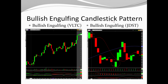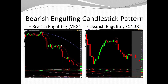Bullish engulfing candlestick patterns consist of a group of candlesticks that give you a good idea of which direction the chart wants to go. In a bullish engulfing pattern, a smaller red candle is totally engulfed by a bigger green candle, producing an uptrend. In a bearish engulfing pattern, an upside move is completely engulfed by a red sell-off candle, producing a strong downside move. At the top of a chart, a bearish engulfing pattern signals a move to the downside.